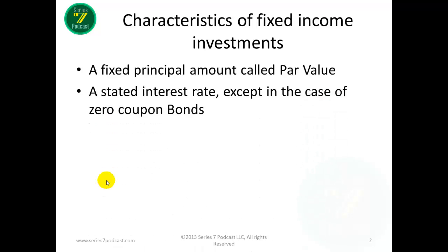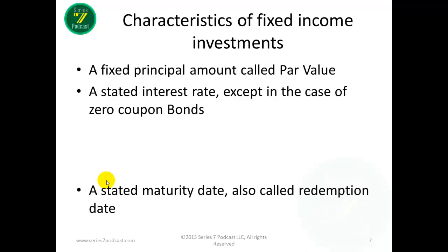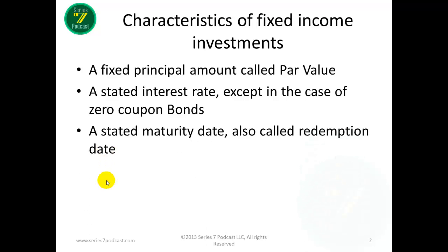Fixed income investments have a stated interest rate, except in the case of zero coupon bonds. That's the exception, but the interest rate is derived or calculated when buying a zero coupon bond. They also have a stated maturity date, also called a redemption date — a date when you can plan on getting your money back.